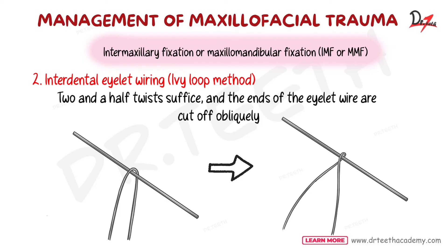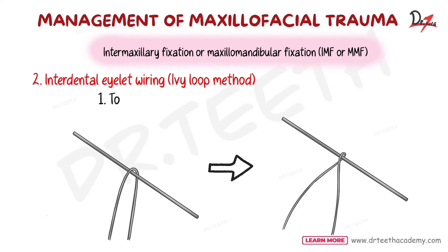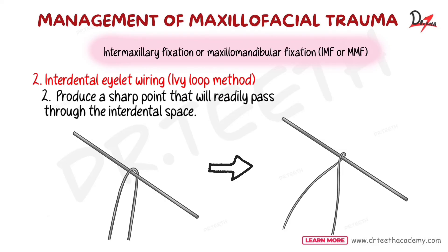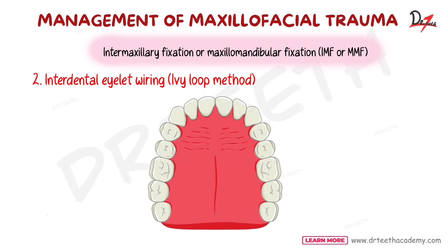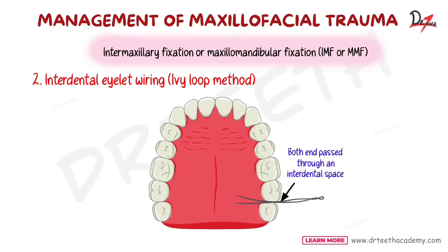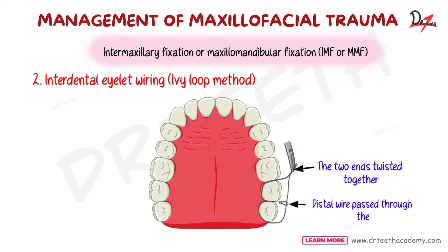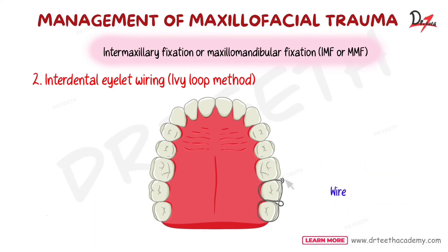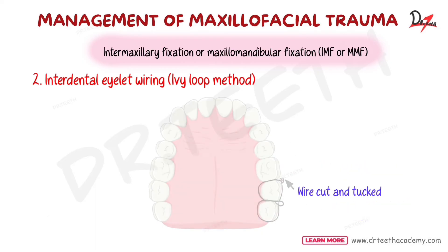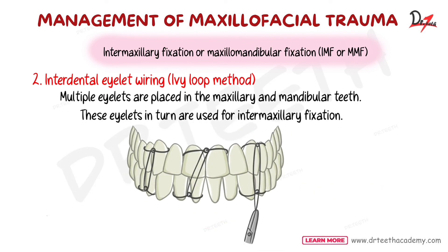Cutting obliquely serves two purposes: it equalizes the length and produces a sharp point that will readily pass through the interdental space. The eyelets are drawn into the interdental space and twisted tight. Both ends are passed through the interdental space, brought buccally from the mesial and distal tooth. The distal wire is passed inside the eyelet, and both wires are twisted together; the twisted ends are cut and tucked into the interdental space. Multiple eyelets are placed in the maxillary and mandibular teeth and used for intermaxillary fixation.